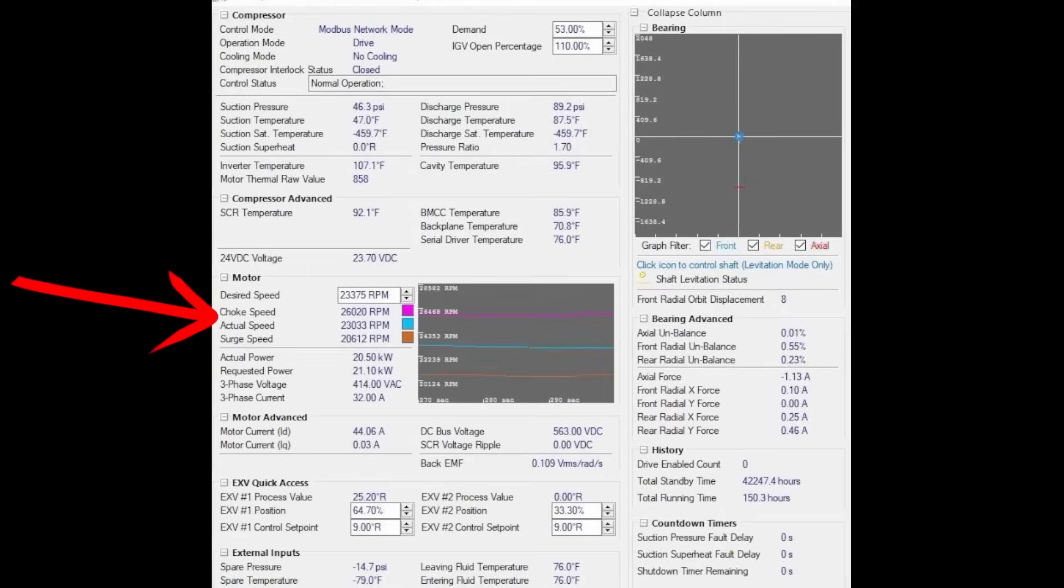The reason that the surge is lower is because these set points are dictated based off of this ratio. So as this ratio increases, these speed thresholds will increase, and as this ratio decreases, these speed thresholds will decrease. This will be a constantly fluctuating point based off of this pressure ratio.